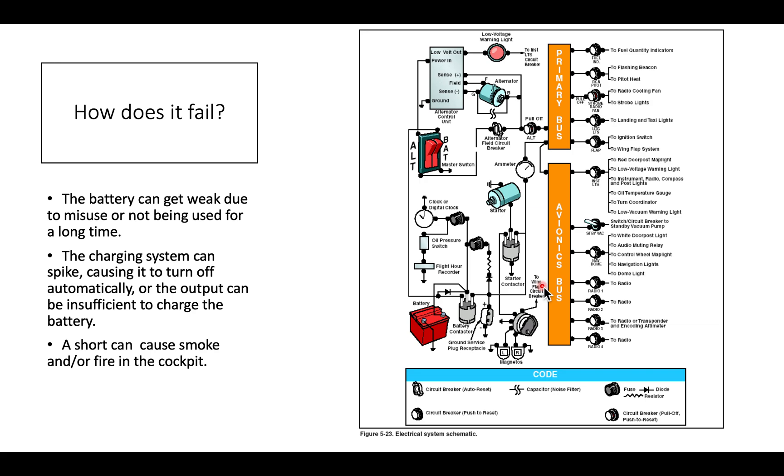It can fail in three main ways. And there are variations on this, but this is the gist of it. One way it can fail is the battery is simply too weak to start the engine in the morning. This can be due to disuse. It's been a while since the aircraft has been flown, especially on a cold day. It can also be the result of misuse. Somebody's left the battery master on overnight, for instance.